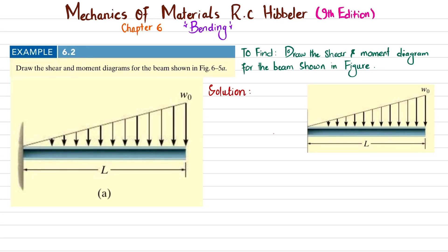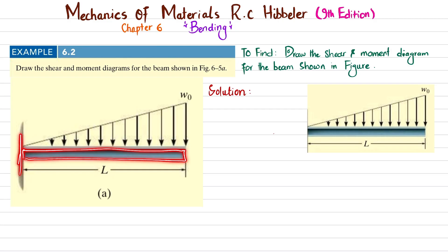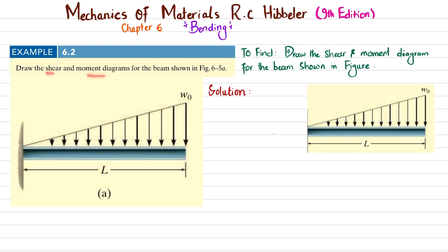Welcome back. In this video we are going to solve Example 6.2 taken from Chapter 6 on bending from the book Mechanics of Materials by R.C. Hibbeler, 9th edition. The problem statement is: draw the shear and moment diagram for the beam shown in Figure 6-5a. This is a cantilever beam having a fixed support at one end with a linear (triangular) load of magnitude w₀ over the entire length L.